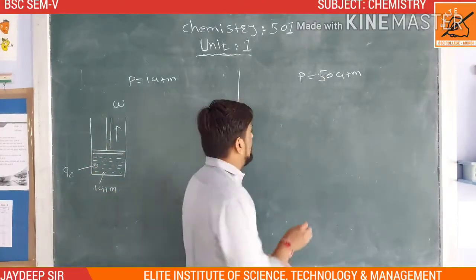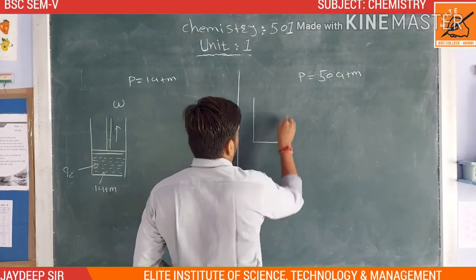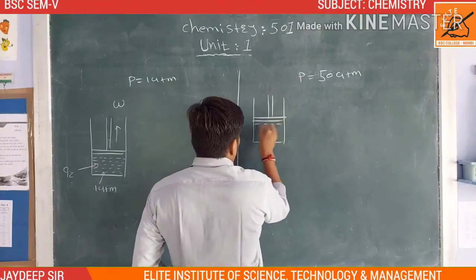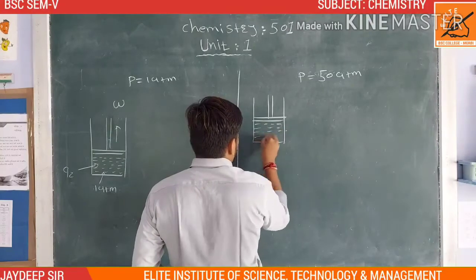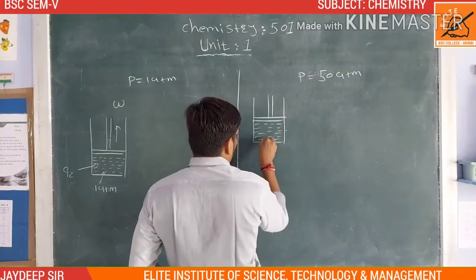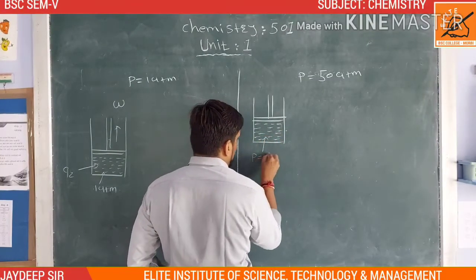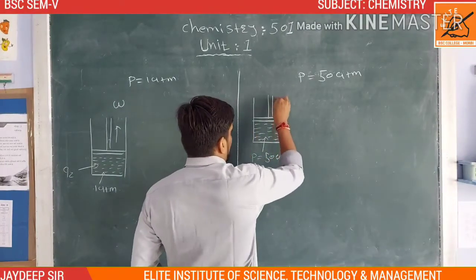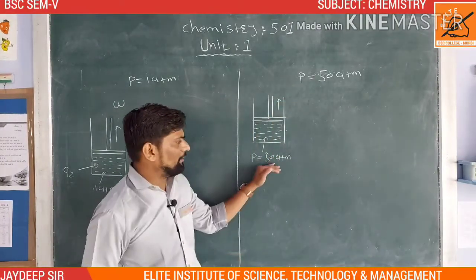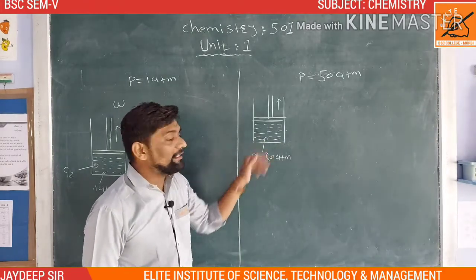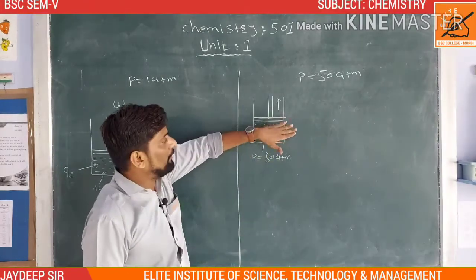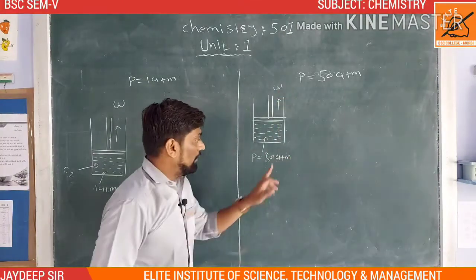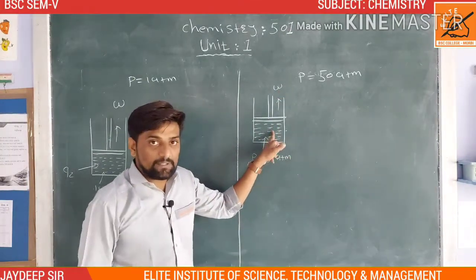In the second situation, there is a cylinder with a piston and the pressure is 50 atm. The pressure acts on the vapor inside the cylinder.